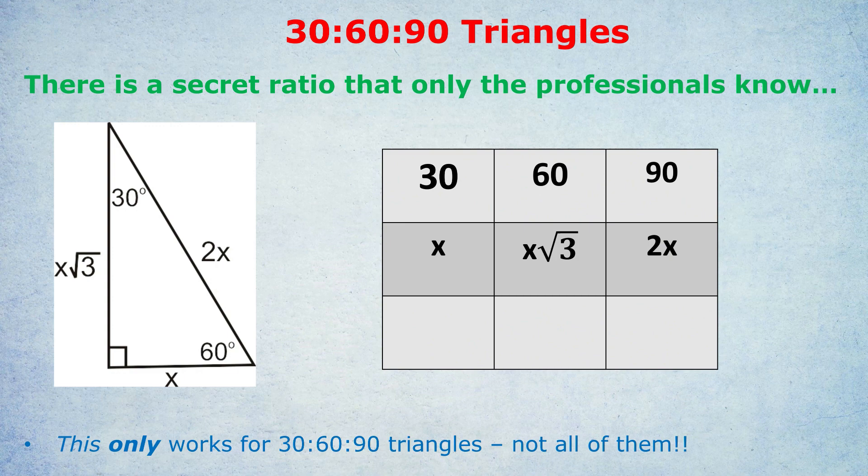Now I know what you're thinking: okay, I could put it into a box and put the 30, 60, 90, and I could put the x underneath the 30, x√3 underneath the 60, and the 2x underneath the 90. But how do we actually solve anything? What could they ask us and how would we solve it? And this is what the following few questions will be about.